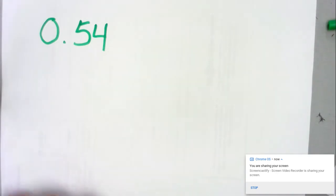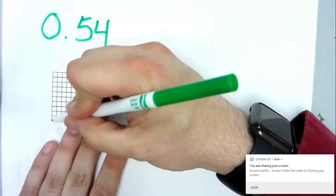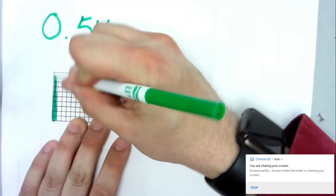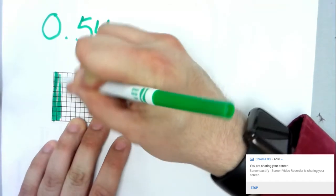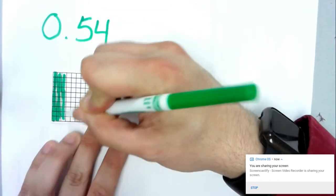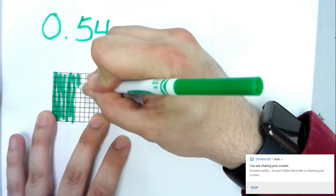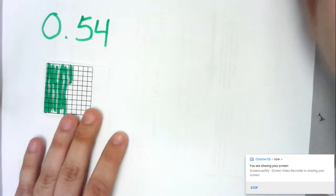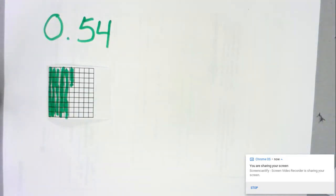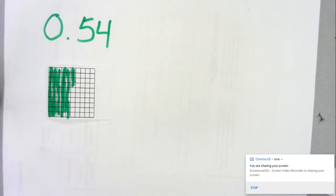So just to look at one more quick example: 0.54. I can represent that by shading in five columns and four individual hundredths. There are a lot of different ways in which we can work with decimals. This has been Mr. Moss working with decimals, and I hope this was a helpful guide for you. Have a great day.